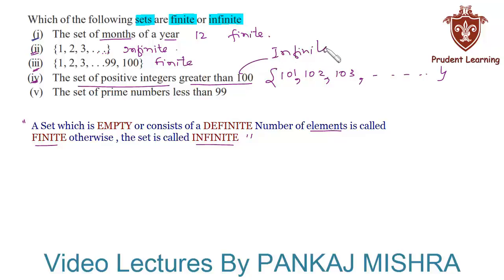The last set given to us says the set of prime numbers less than 99. Well, we know that prime numbers less than 99 are 2, 3, 5, 7, and so on up to 97. So this is a finite set.